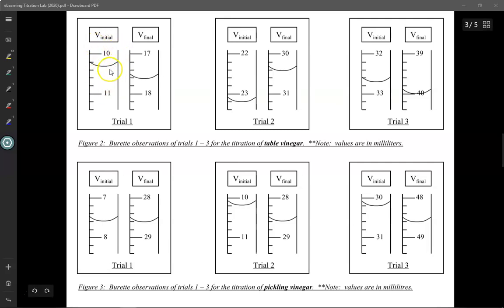So record what volume you see. Remember we always read the bottom of the meniscus and then subtract the final value from the initial value to determine what volume of sodium hydroxide did you add in during this titration for trial number one. Do the same thing for trial number two and trial number three and we're going to take these data points and try to average them together to calculate how much acetic acid is located inside my table vinegar. Then you're going to do the exact same thing over here except it's with pickling vinegar.